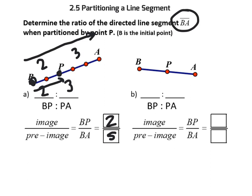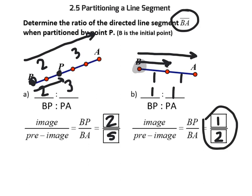Likewise, B is our center of dilation. What would be the partitioning ratio? 1 part to 1 part — that's our ratio. What would be the scale factor? The original value was 2 away — that's our pre-image. After the partition, it was 1 away. So a scale factor of 1 half. The partitioning ratio is 1 to 1.